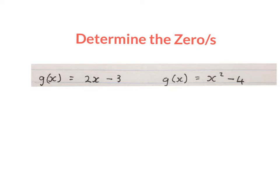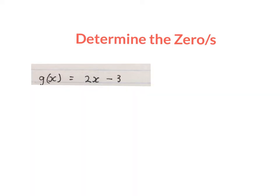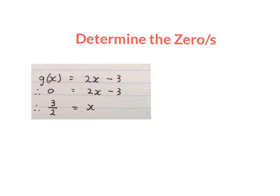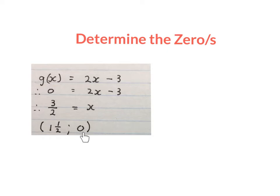The next question asks: determine the zeros of the function G of X equals 2X minus 3. Working out the zeros means making the Y value equal to 0. So 0 equals 2X minus 3, and you get X equals 3 over 2, or one and a half. You can write that as a coordinate: one and a half, zero.